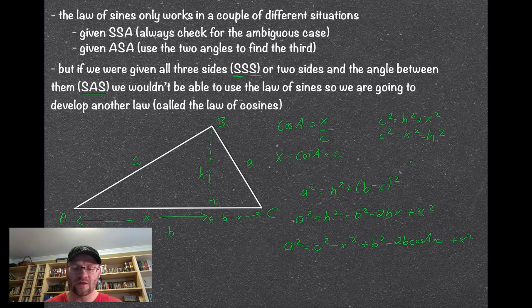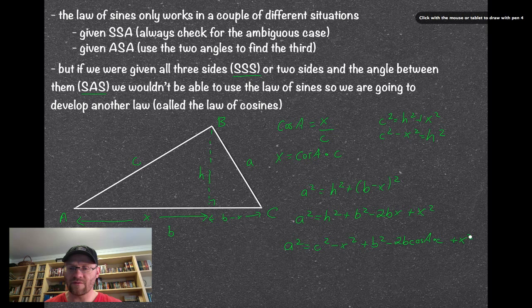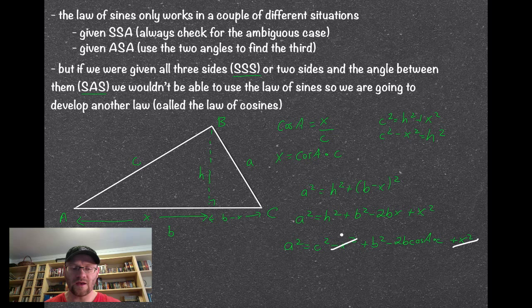Now, a few things cancel off, I get this positive X squared and this negative X squared canceling off, and in the end I end up with my law of cosines which says A squared equals, we're just going to rearrange it a little bit, make it alphabetical, so B squared plus C squared minus 2BC cosine A, and this is your law of cosines.